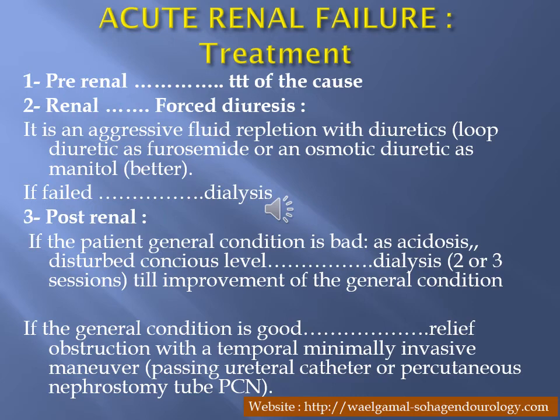Treatment is treatment of the cause. For pre-renal — prolonged hypotension — replace with blood transfusion. For renal cause: forced diuresis and aggressive fluid repletion with loop diuretics such as furosemide or osmotic diuretics like mannitol; if failed, dialysis. For post-renal cause with poor general condition — acidosis, disturbed conscious level — give dialysis sessions until improvement, then relieve the obstruction with a minimally invasive maneuver: urethral catheter or percutaneous nephrostomy. After stabilization, treat the underlying cause.